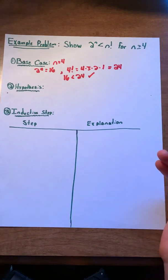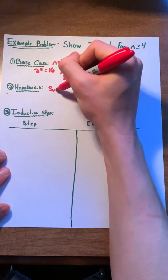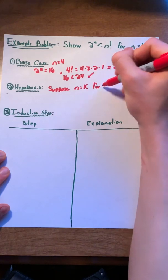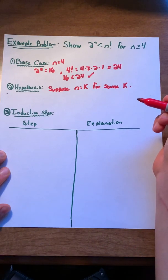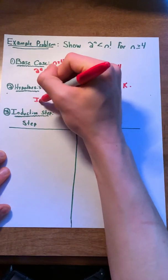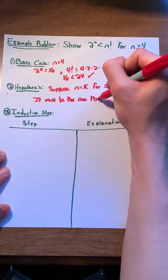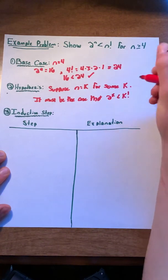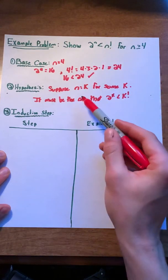Now we're going to go into the inductive hypothesis where we make an assumption. We're going to suppose that n equals k for some k. This is where we create an arbitrary value. We will now say that if n equals k, it must be the case that two to the k is less than k factorial. All we've done here is taken k and plugged it into the equation for n because n equals k.